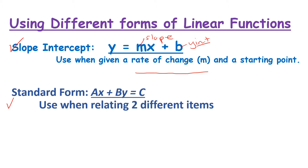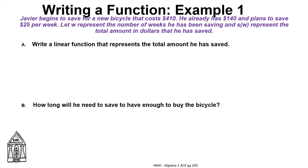We also have standard form: ax + by = C. That is used when you're relating two different items — for example, apples and oranges, or nickels and dimes. If you have two different items with no rate of change, that is when you're going to use standard form. All right, so let's go ahead and try some examples.